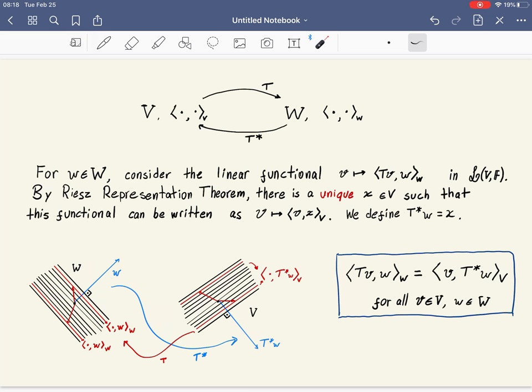You see here v and w play very asymmetric roles. You're trying to define a function, you're trying to define what T w is, and you're talking about a functional, and v here is just a dummy variable just used to define this functional. From w we found some x, and we defined T star w to be x, and v was just the argument of this linear functional.